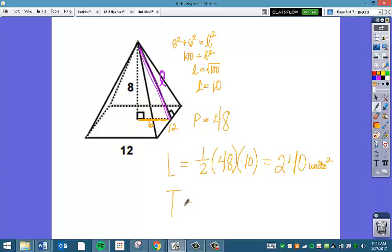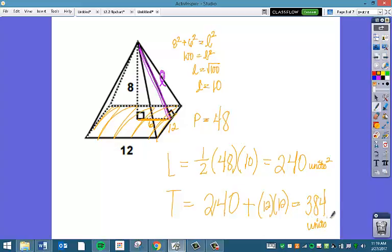So then our total surface area, we're just going to take that lateral surface area, 240, and then we're going to add in the area of the base. So this is my base, this square. So it's just going to be 12 times 12, that's the area of the base, 144. So our total surface area is going to be 384 units squared. So our capital B, area of the base, is 12 times 12, which is 144. That's where this came from.